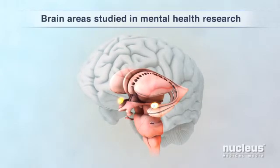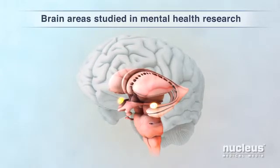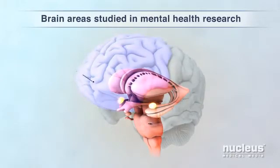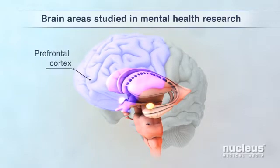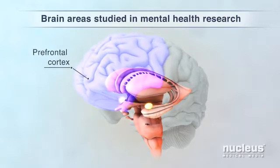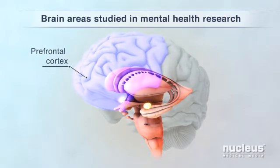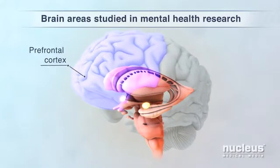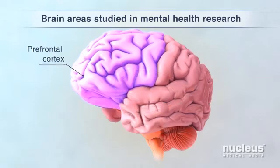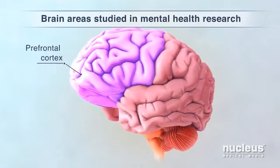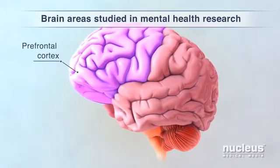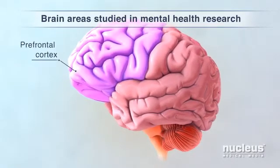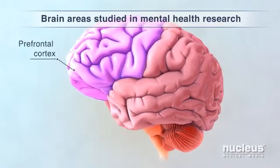In addition, the amygdala works with the prefrontal cortex to control your response to fearful and stressful events. The prefrontal cortex also helps you make decisions, solve problems, and recall memories.